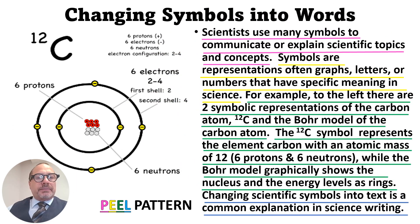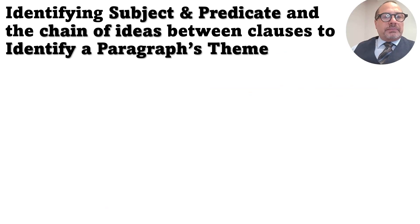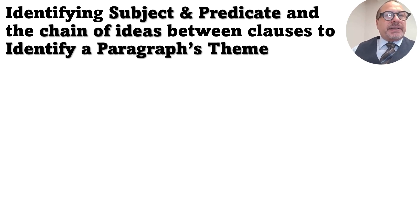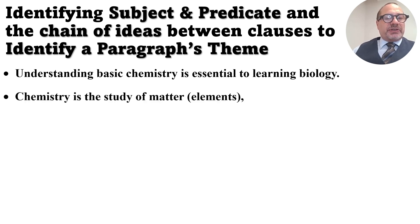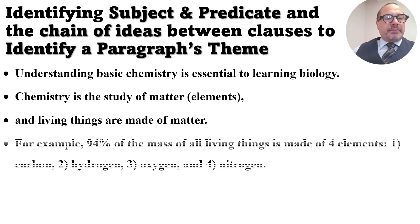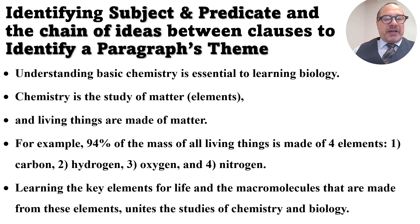The last section of this assignment asks you to identify subject and predicate and the chain of ideas between clauses to identify the paragraph theme. By analyzing the text, we're looking to find the theme. So the first sentence: 'Understanding basic chemistry is essential to learning biology.' Second: 'Chemistry is the study of matter; elements and living things are made of matter.' Third: 'For example, 94% of the mass of living things is made of four elements — carbon, hydrogen, oxygen, and nitrogen.' Fourth: 'Learning the key elements for life and the macromolecules made from these elements unites the studies of chemistry and biology.'